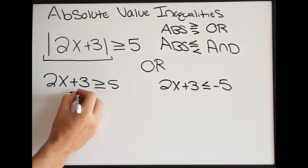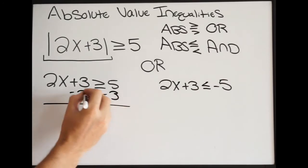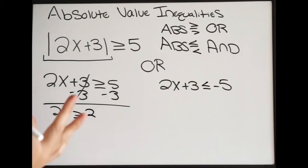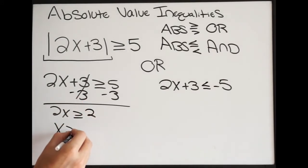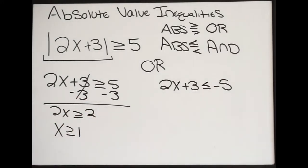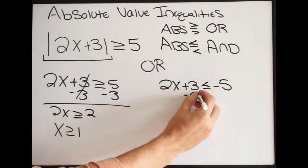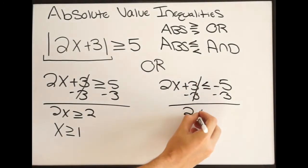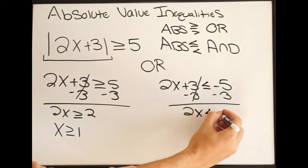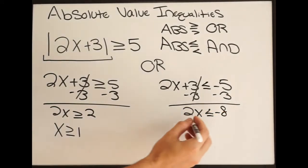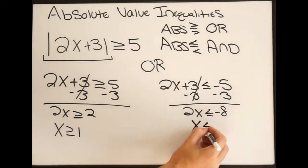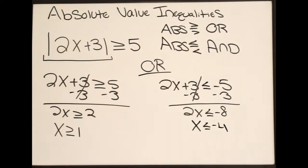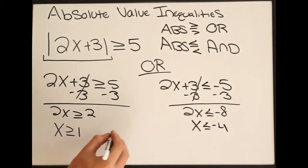So we're going to minus 3 on both sides on this one, so we get 2x is greater than or equal to 2. Divide by 2, x is greater than or equal to 1. Let's go ahead and solve the second one. So minus 3 on both sides — that cancels — so we get 2x less than or equal to negative 8. Divide by 2, so x is less than or equal to negative 4. Remember, our separator here is going to be OR.